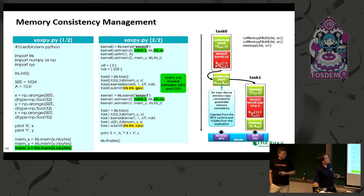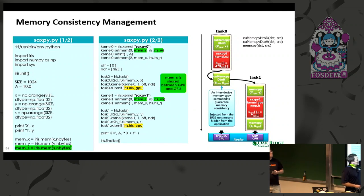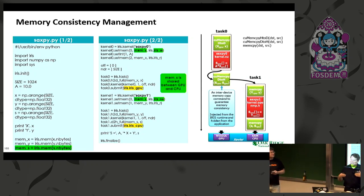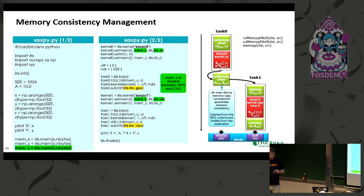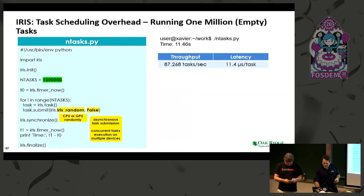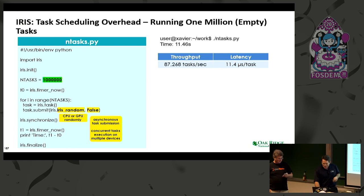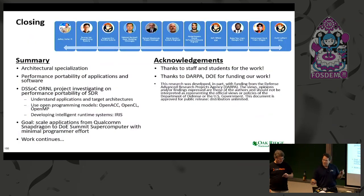The execution memory management works by having you identify read/write dependencies on different data regions, essentially telling IRIS there's a potential inconsistency. IRIS has a directory and knows to move data from one device to another based on task completion. We're looking at efficiency — targeting nearly 90,000 tasks per second on both CPU and GPU. IRIS is online, so feel free to take a look and let us know what you think.